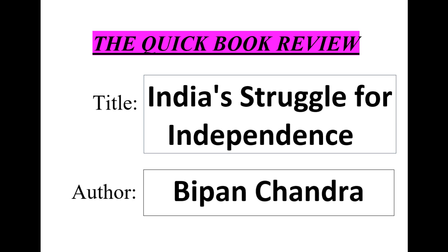In addition to discussing the independence movement, Chandra also delves into the broader historical context of British rule in India and its impact on Indian society. He examines the British policies and administration that led to widespread poverty and exploitation, and the cultural and religious changes brought about by British rule. The author also provides a detailed analysis of the events leading up to the partition of India in 1947 and the challenges faced by the newly formed Indian government in the aftermath of independence. Chandra concludes by highlighting the legacy of the independence movement and the challenges faced by India in the post-independence era.